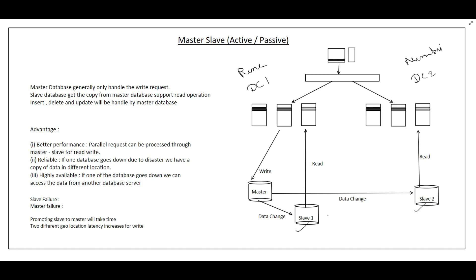If a slave goes down, we can transfer its read requests to another slave. And if the master goes down, we can promote a slave to become the new master, which can then handle both read and write requests. That is how we make the system reliable.